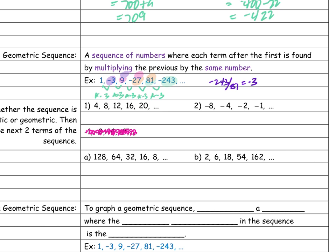What do I add to 4 to get 8? That would be plus 4. 8 plus 4 is 12. 12 plus 4 is 16. 16 plus 4 — I'm adding 4 every time. So this is arithmetic.